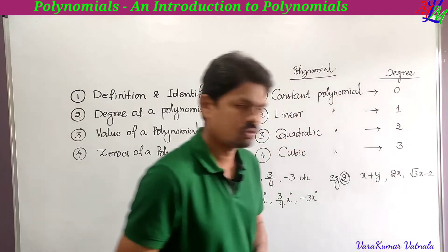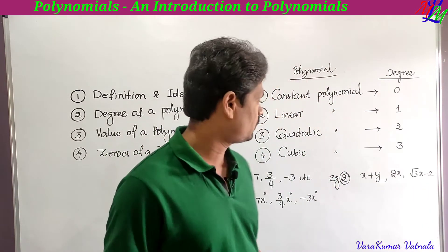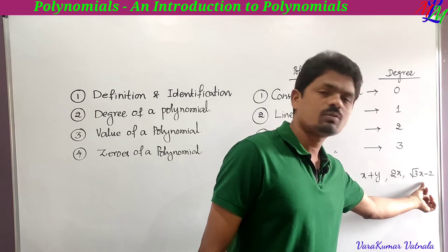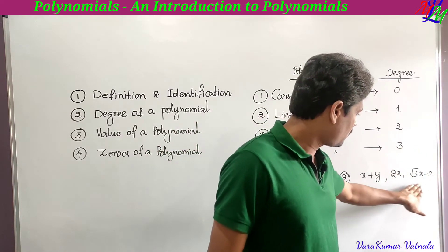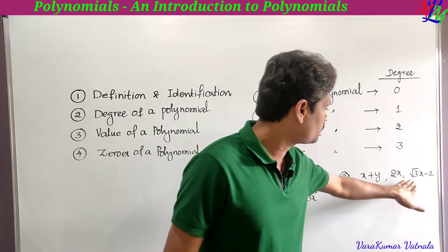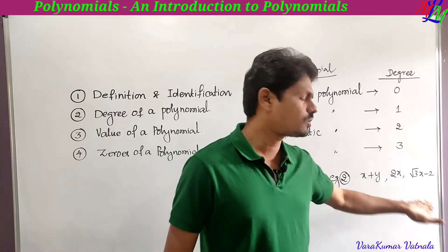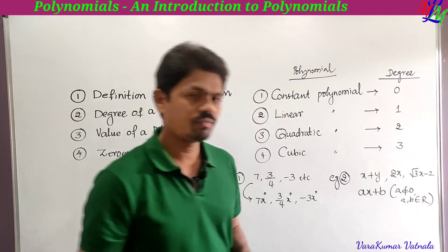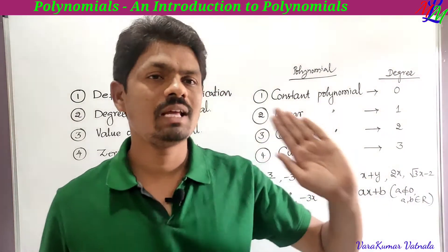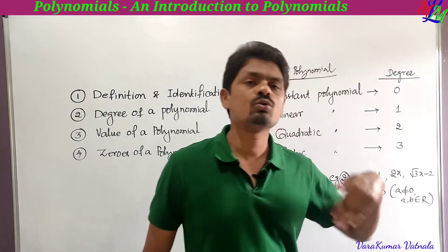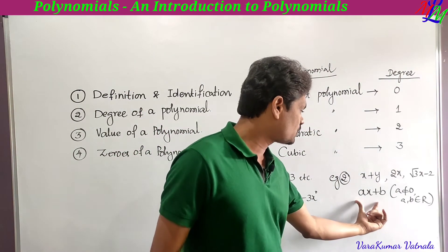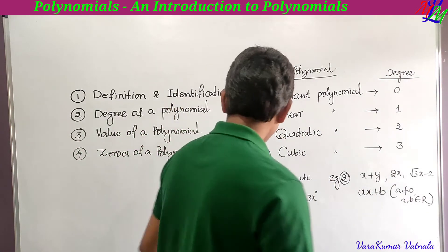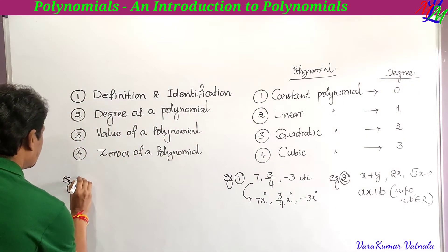Examples of linear polynomials: all have the highest power of the variable equal to 1, so they are linear polynomials. The general form of a linear polynomial is ax + b, where a ≠ 0 and a, b are real numbers.